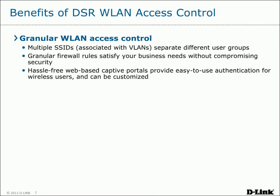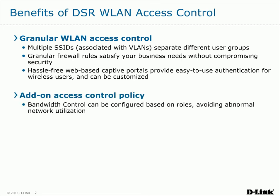D-Link's DSR Unified Service Routers make granular access control for wireless users achievable. You can configure multiple SSIDs for your different user groups, allowing you to create granular firewall rules to control access for each group. Customizable captive portals give you a simple way to provide easy-to-use authentication for your wireless users. DSR routers also support add-on access control policies such as bandwidth control, which can be configured based on user roles to help avoid abnormal network utilization.